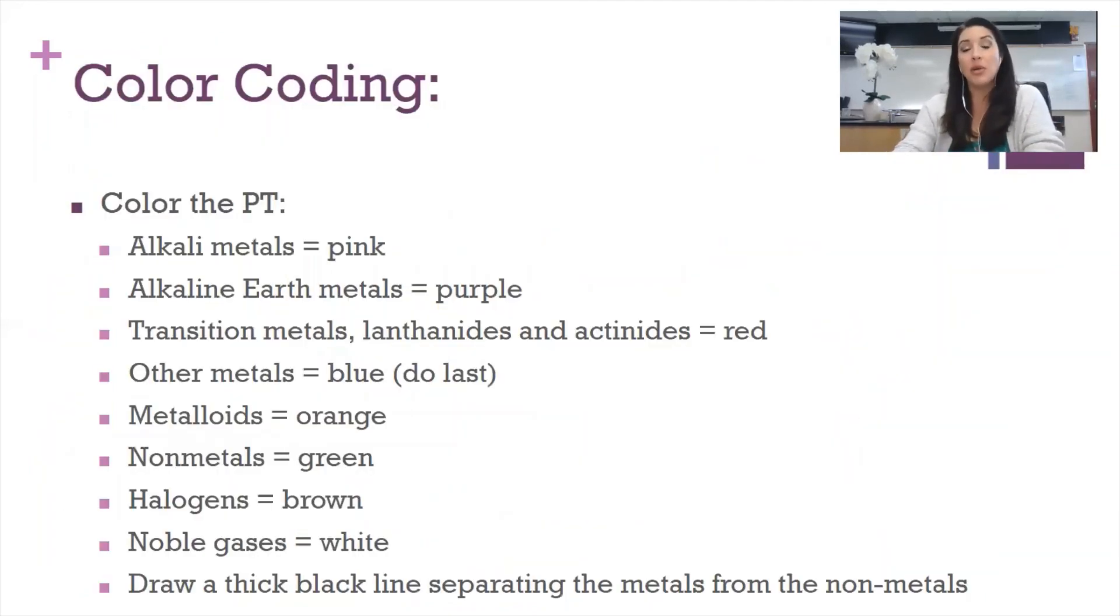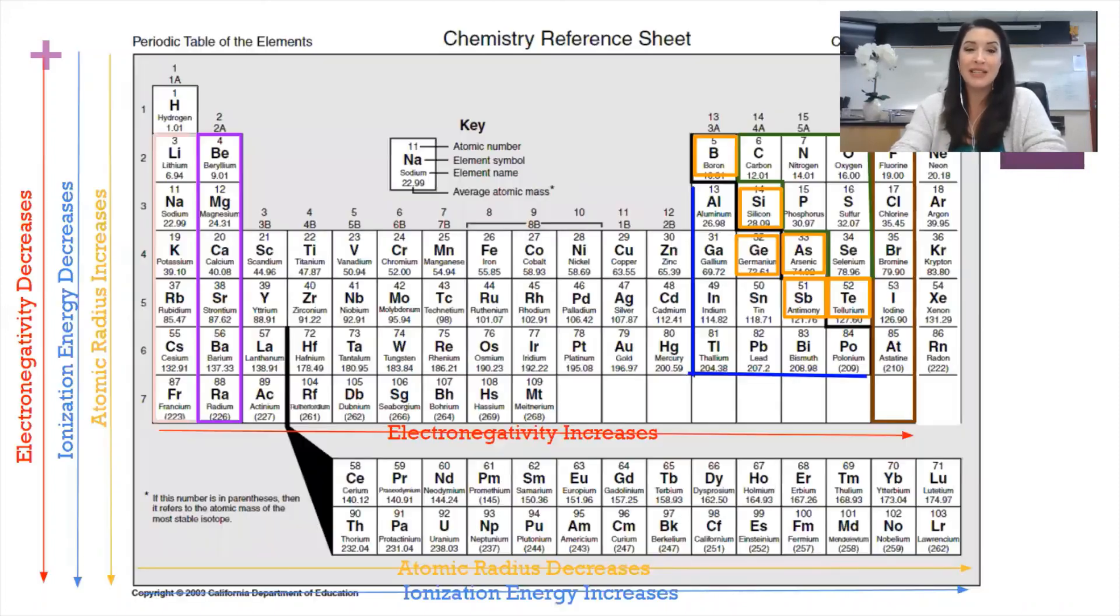Now we'll color code our periodic table. We'll give each of the columns, each of the groups, its own color coding. So follow this key to draw your own annotated periodic table, and we're using the same one for the rest of this unit. You'll have something that looks like this at the end.